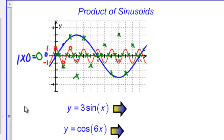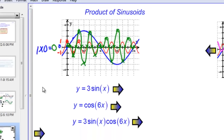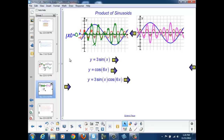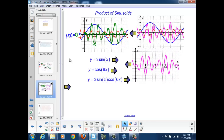Connecting these points, we create a sinusoid that alternates up and down repeatedly. Using technology, we can see it bounces up and down, getting larger, then smaller, then larger again, then smaller. If we remove the original functions, we see a repeating pattern where the amplitude changes as we move across the function. The way we describe this is: our graph has a varying amplitude.